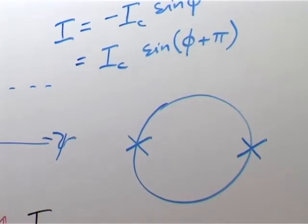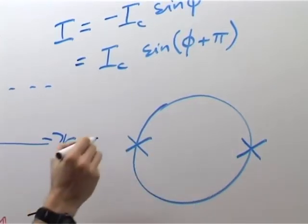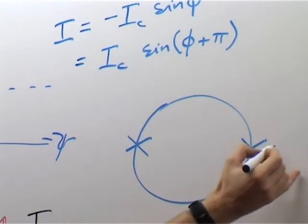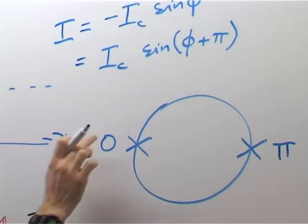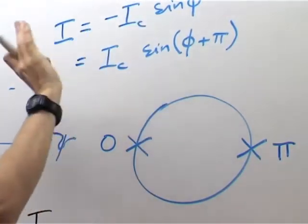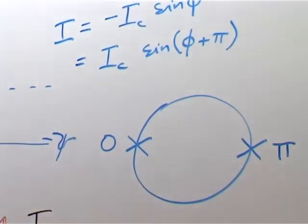And if we can, we can make these two junctions different. So we can make this junction, say, a π junction. And then we can make this a zero junction. So this is just a junction with a standard critical current with none of this built-in π phase shift.